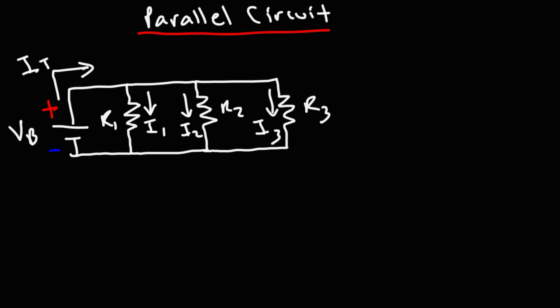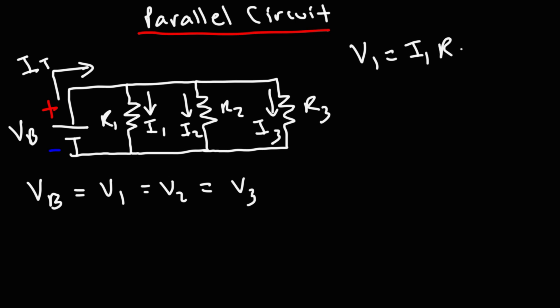In a series circuit, VB was the sum of V1, V2, V3. In a parallel circuit, VB equals V1 equals V2 equals V3, because each resistor is connected across the same battery, so the same voltage is applied to each. In both series and parallel circuits, V1 still equals I1 times R1, V2 equals I2 times R2, and the same is true for V3.